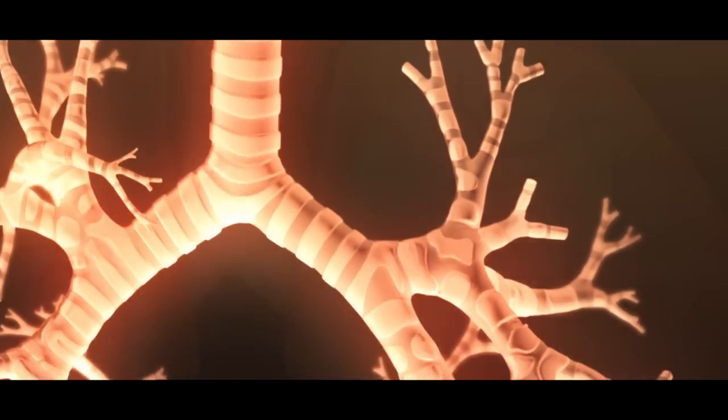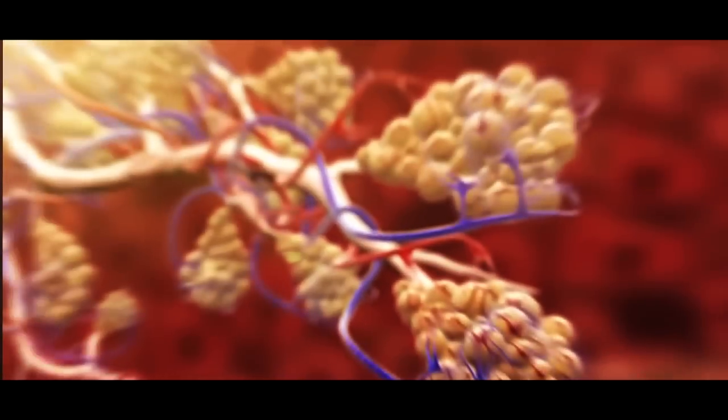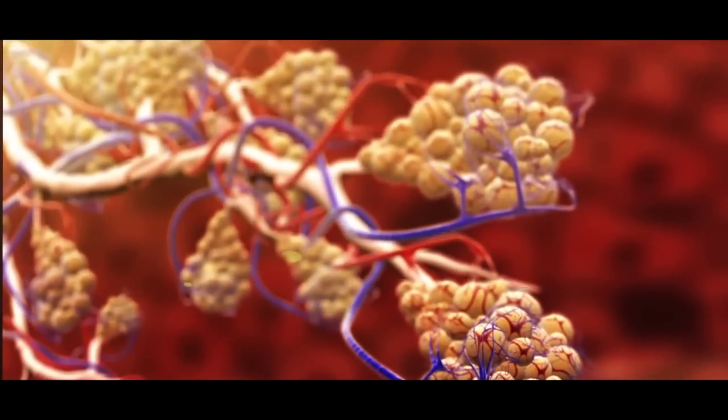Then inside the lungs, bronchi branch into smaller air pipes called bronchioles. Finally, from bronchioles, air moves inside tiny air sacs called alveoli, so that gas exchange can take place.